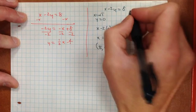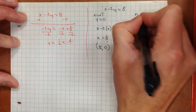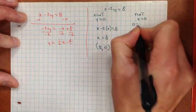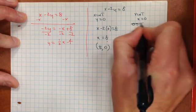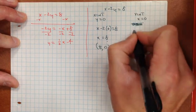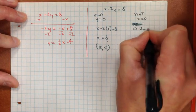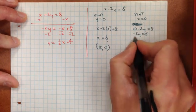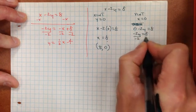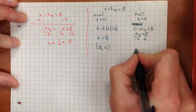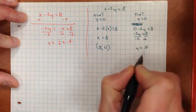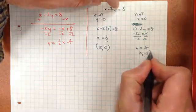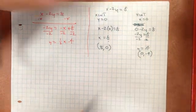For the y-intercept, make x equal to 0: 0 minus 2y equals 8, so negative 2y equals 8, divide both sides by negative 2, y equals negative 4. The point is (0, negative 4).